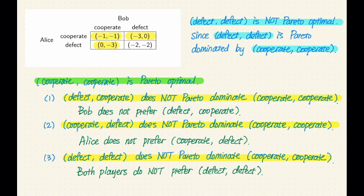We can use the same argument for the second case. Because this game is symmetric, cooperate-defect does not Pareto dominate cooperate-cooperate, because Alice does not prefer cooperate-defect over cooperate-cooperate. So the reasoning for cases one and two are mirror images of each other. Now for the third case, which is the easier case: why does defect-defect not Pareto dominate cooperate-cooperate? Because both players prefer cooperate-cooperate. We're comparing defect-defect with cooperate-cooperate, and both players actually prefer cooperate-cooperate. Therefore, defect-defect does not Pareto dominate cooperate-cooperate.